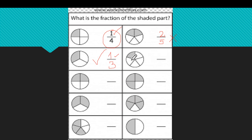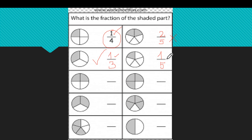How many equal parts make this circle? One, two, three, four, five. Write number five at the bottom. How many are shaded? Only one. Is this a unit fraction? Yes, it is, because only one part is shaded.